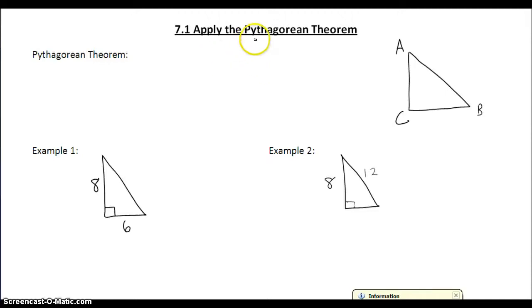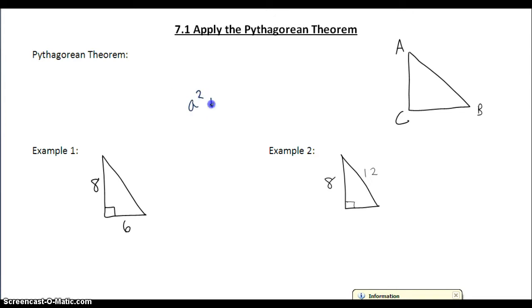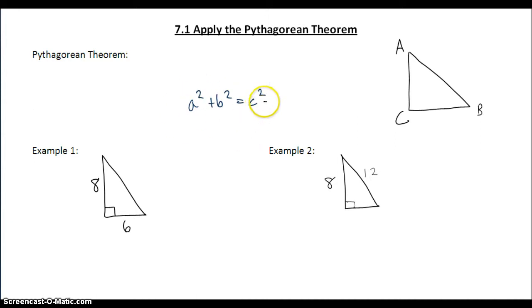In today's lesson, we're going to cover the Pythagorean Theorem. You probably already have the Pythagorean Theorem memorized as a squared plus b squared equals c squared. But if that's all you have memorized, you've actually lost half of the Pythagorean Theorem.